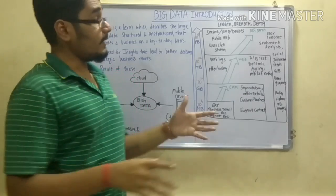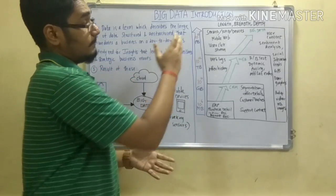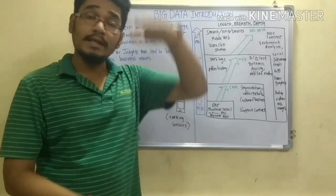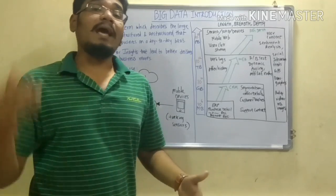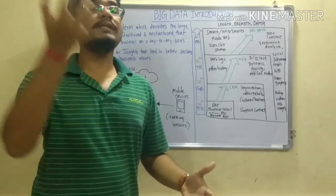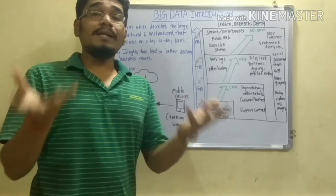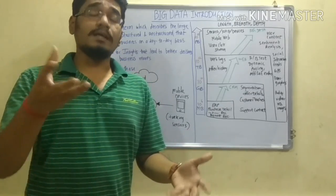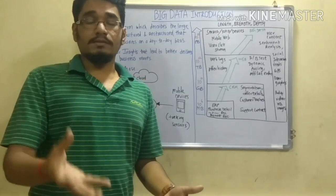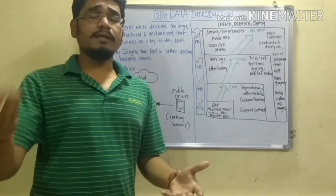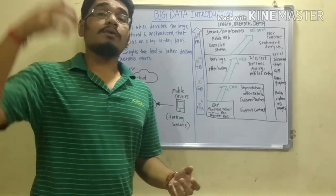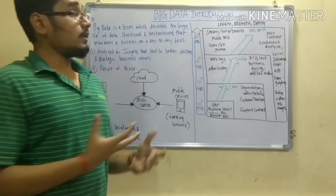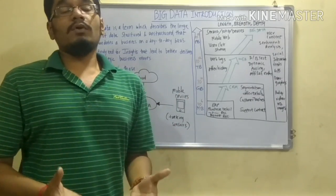Big data is categorized along three dimensions: length, breadth, and depth. It measures data lengthwise, breadthwise, and as deep as possible — drilling down to pull out results. For example, when you search on Google, in 99 percent of cases it fetches results no matter how specific, pulling them from the depths of the big data pool.